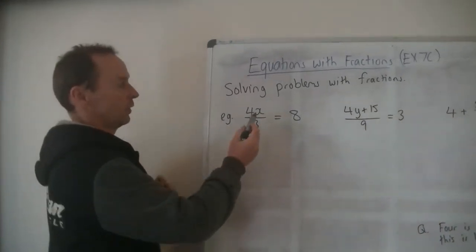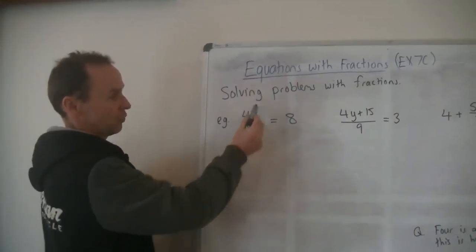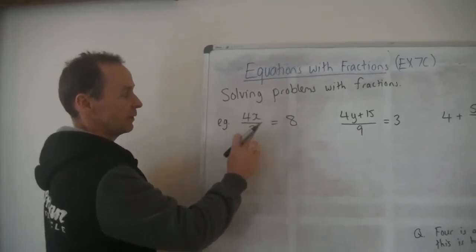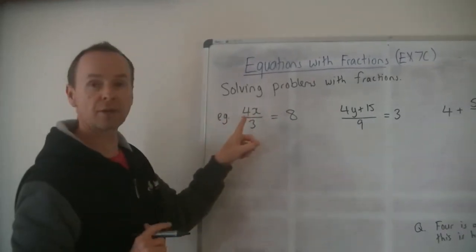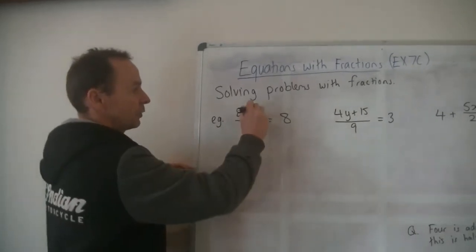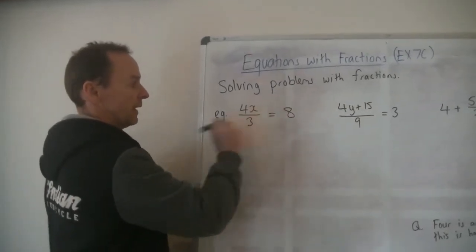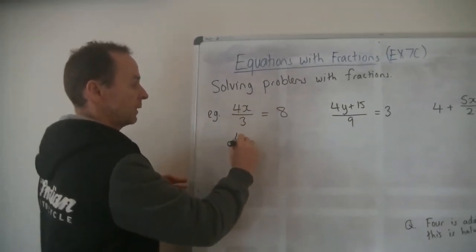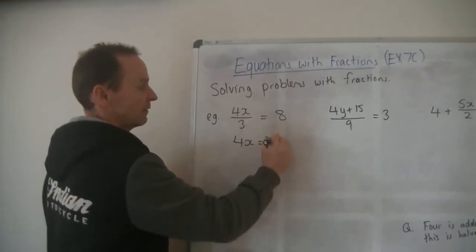So the first thing we need to do is get rid of this fraction, because it's all one big fraction. So how do we do that? We need to get rid of, what's the opposite of divided by 3? It's times by 3. So we times both sides by 3, and then I'll cancel that divided by 3. So we get 4x equals 3 times 8 is 24.